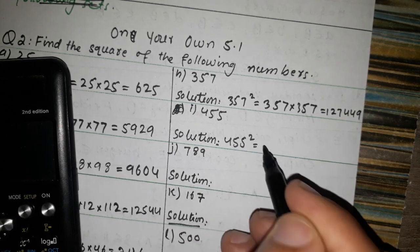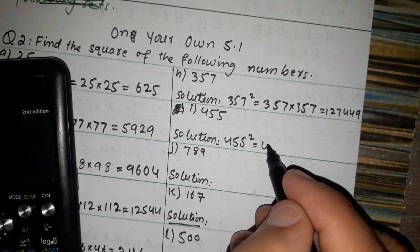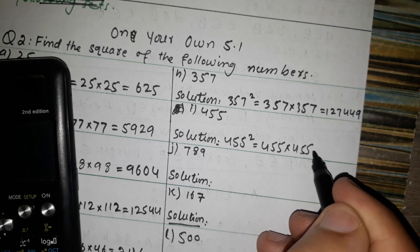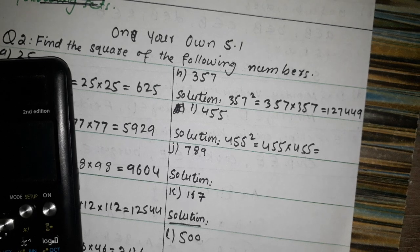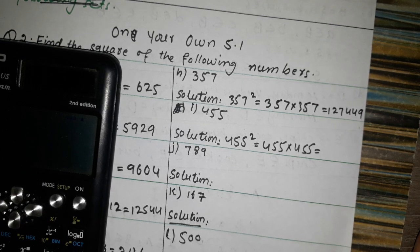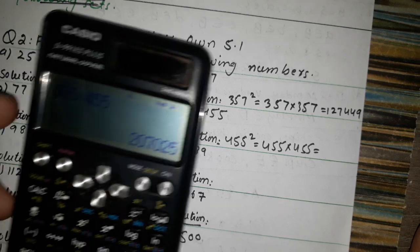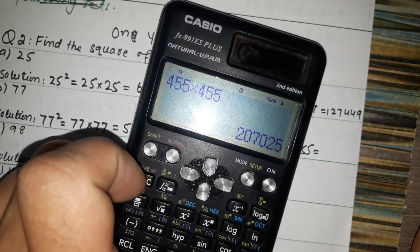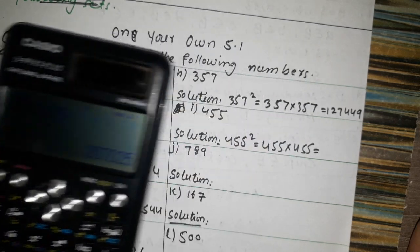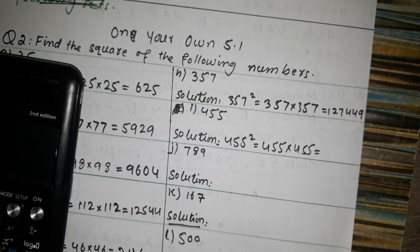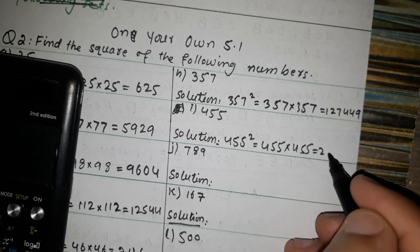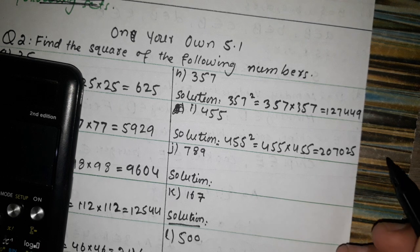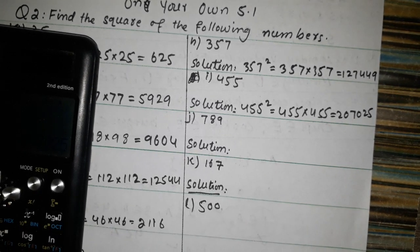Now 455 square. 455 cross 455 — we multiply the number. The answer is 207025. So 455 squared equals 207025.